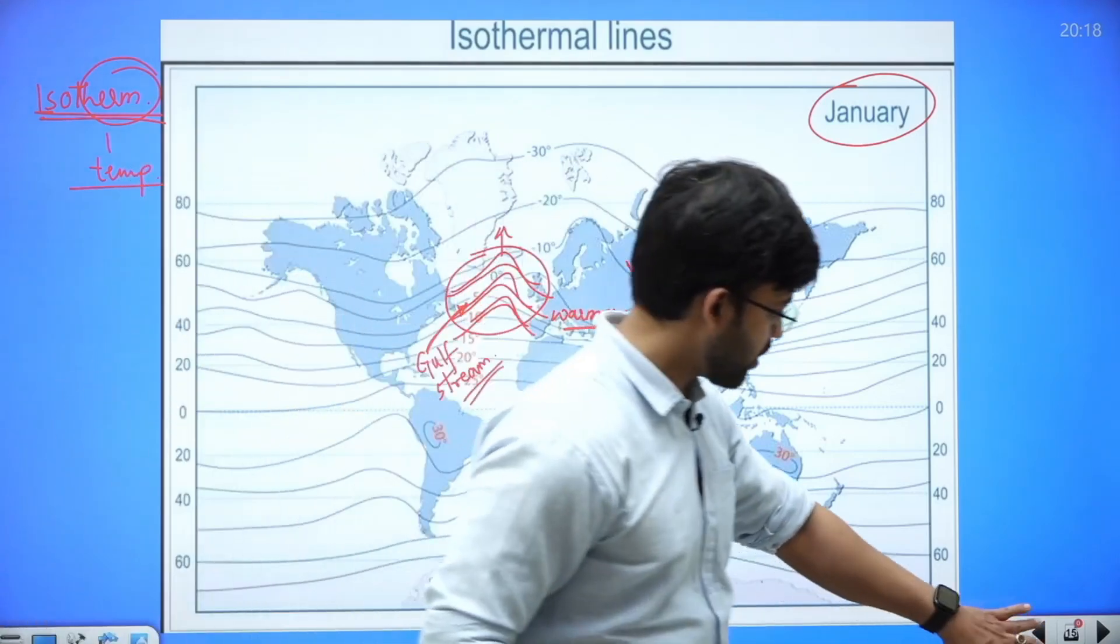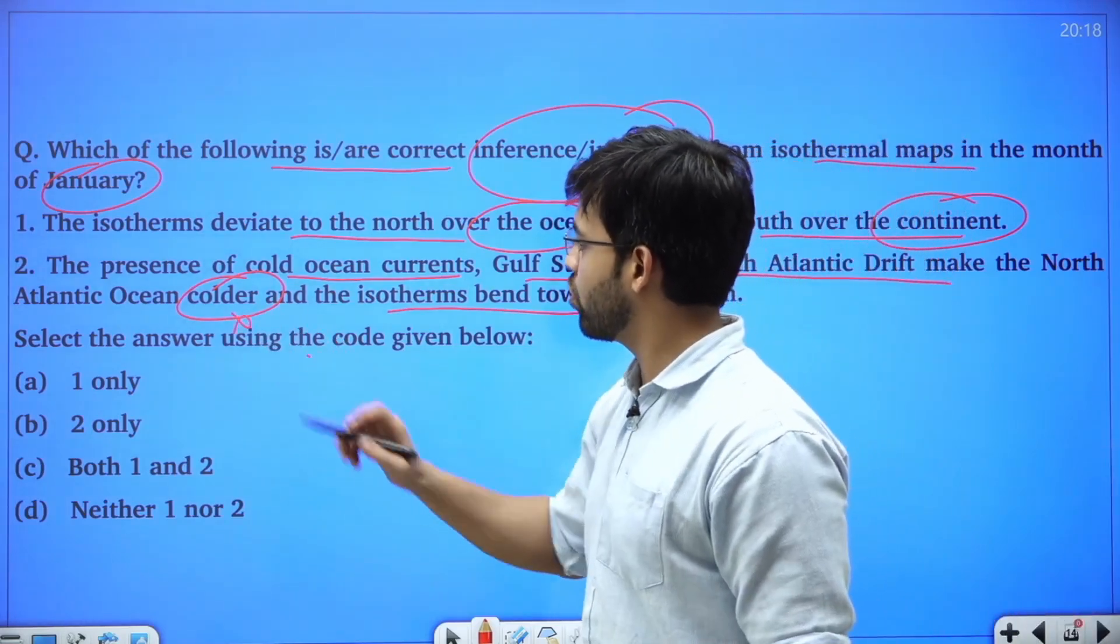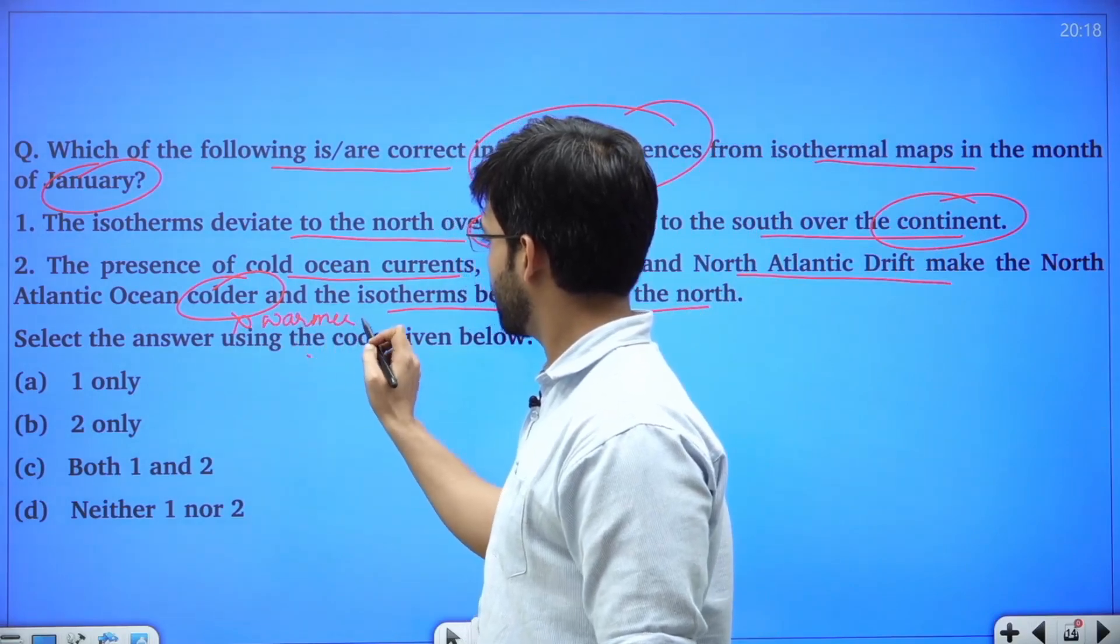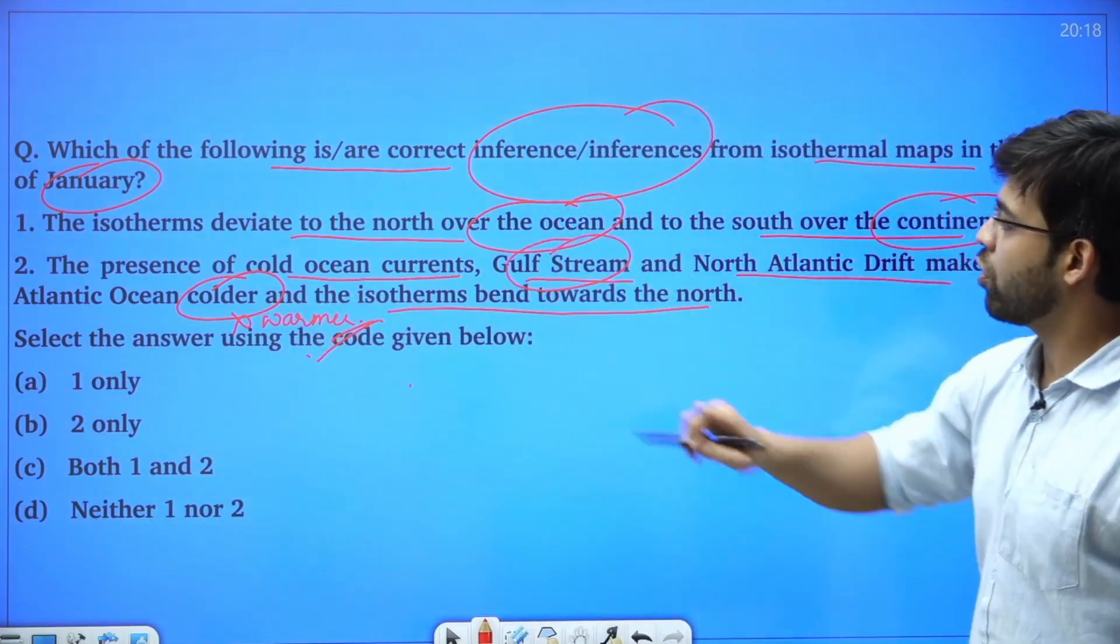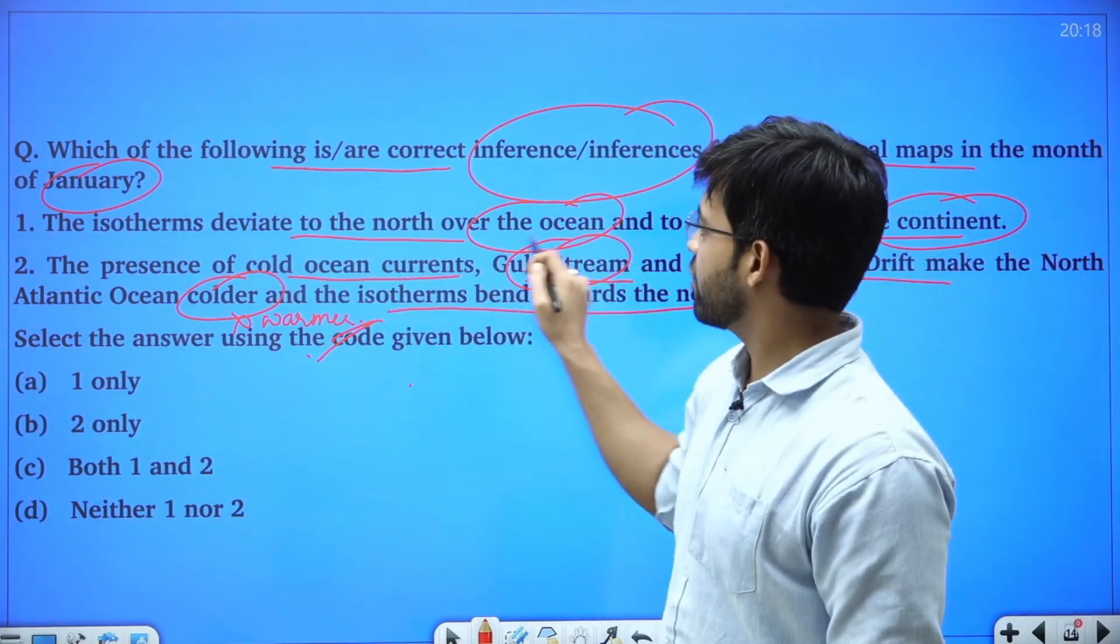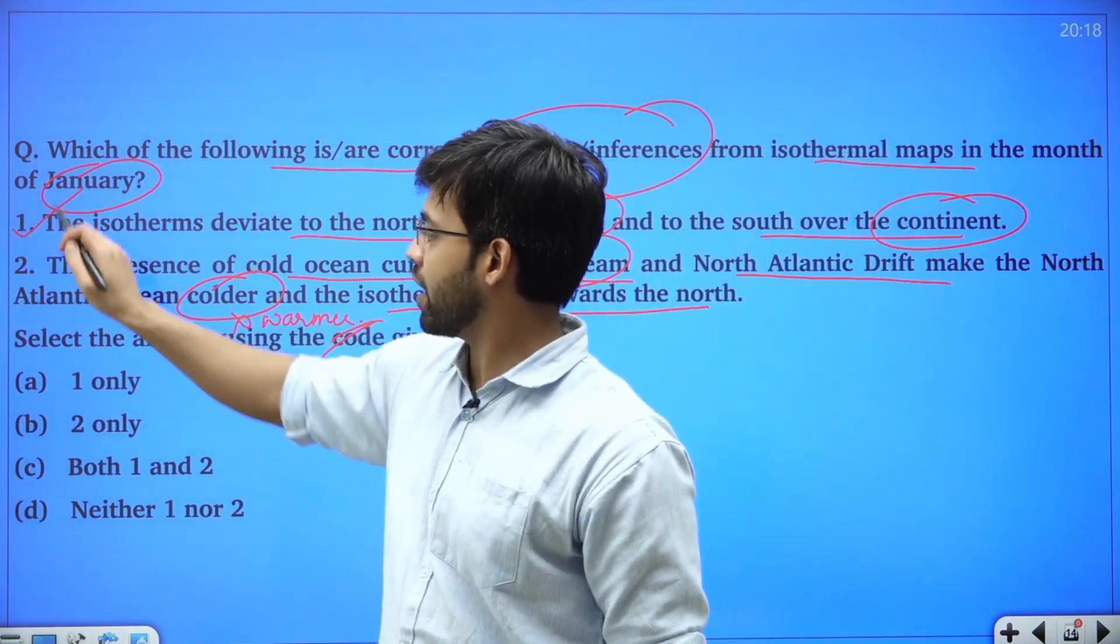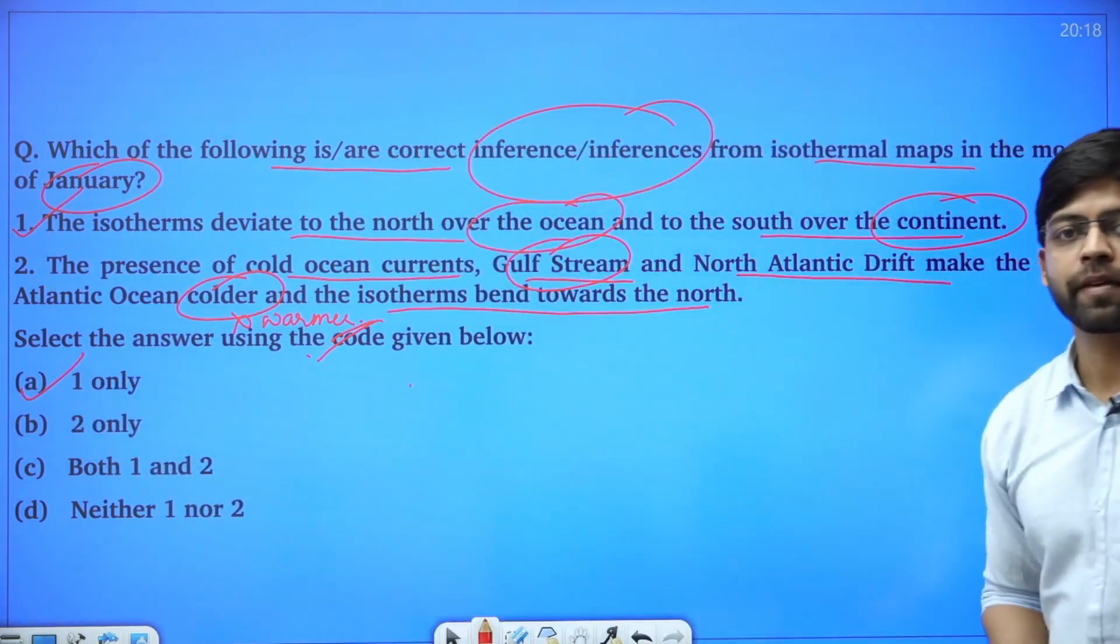So our second statement will be incorrect because this is not making it colder, this is making it warmer—the Gulf Stream and North Atlantic Drift. Whereas the isotherms deviate to the north over the ocean and to the south over the continent, this statement is correct. So our answer will be (a) 1 only. Thank you.